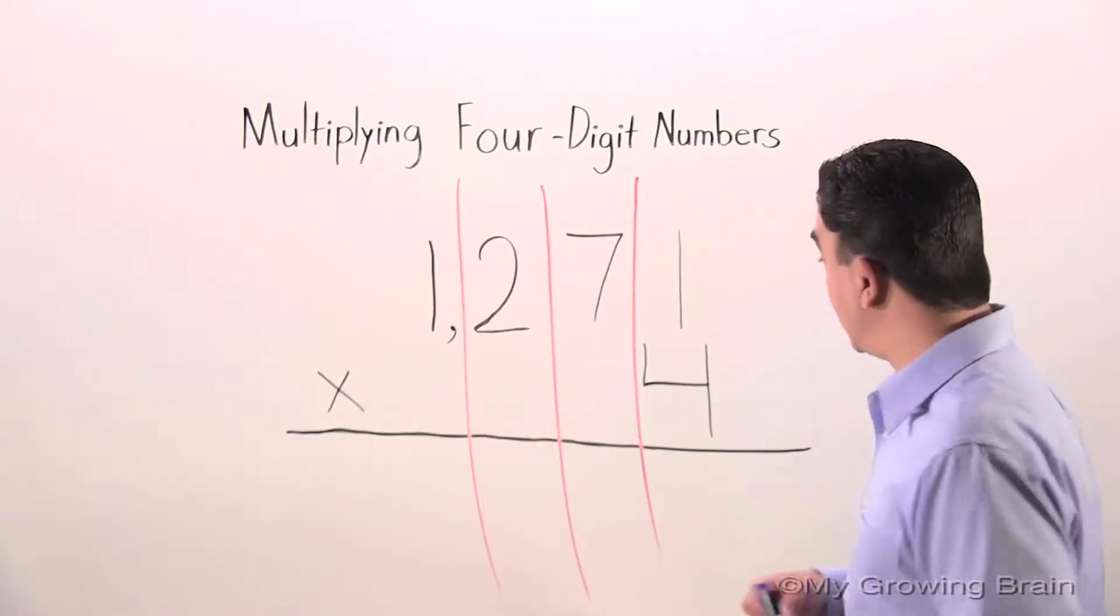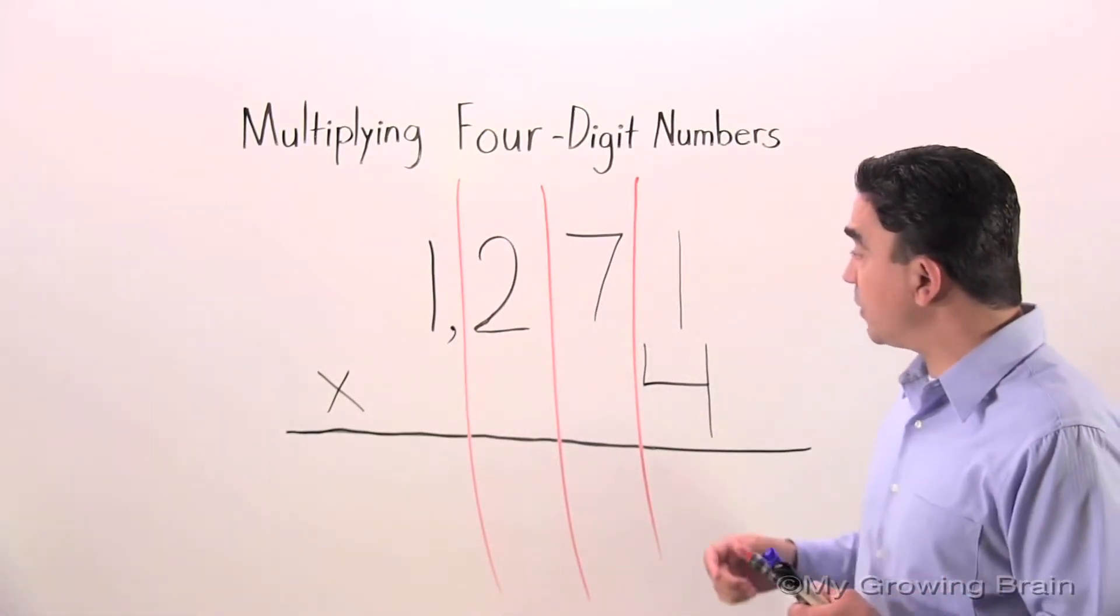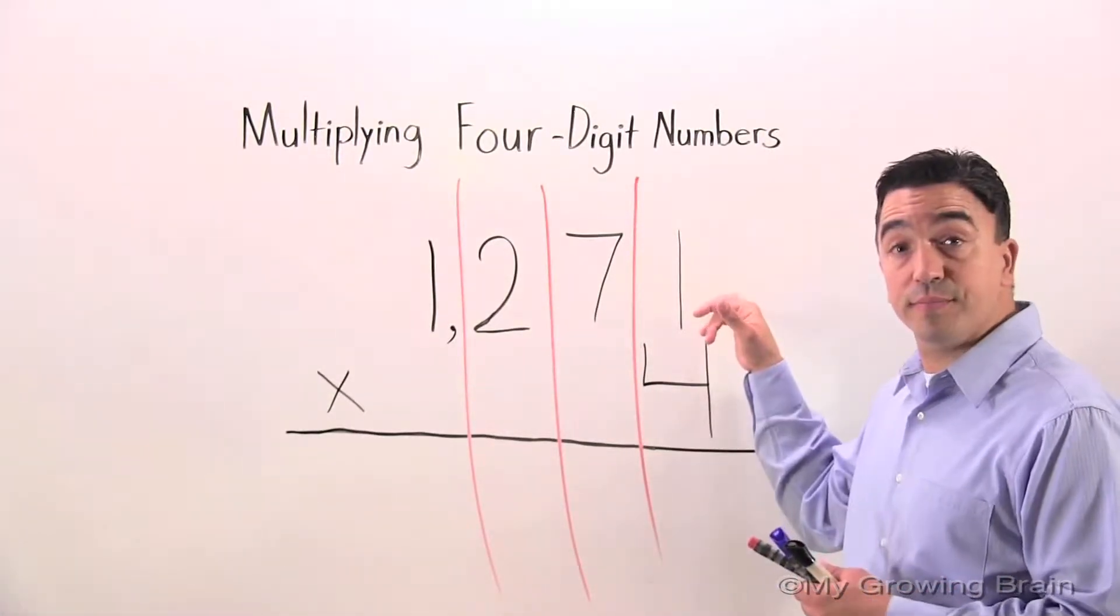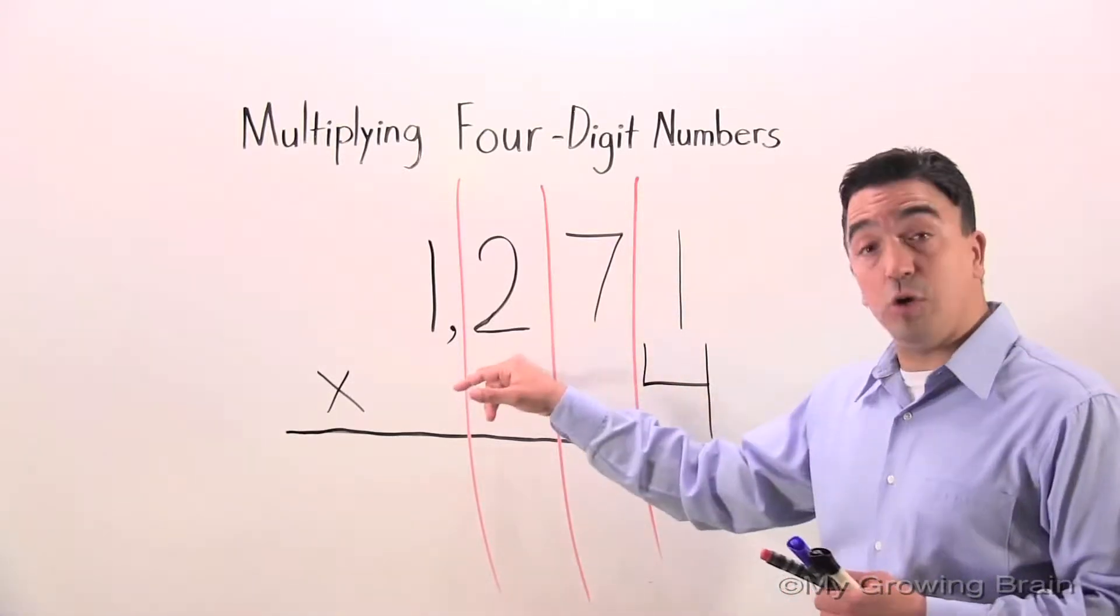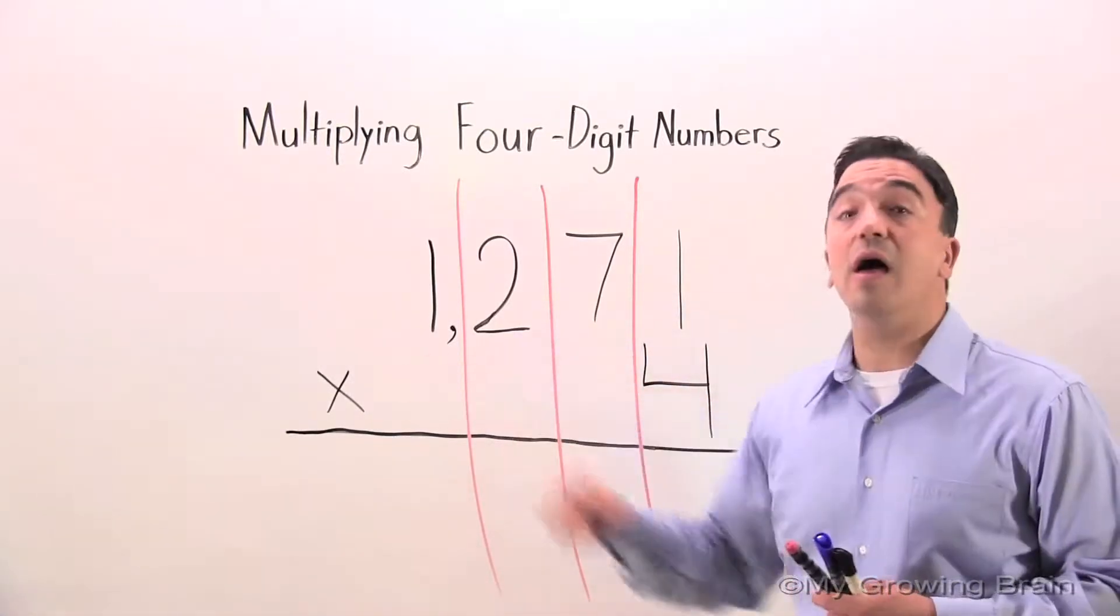So we're going to go right in and we're going to start with the four. And remember, we're going to be multiplying the four times the one, then the four times the seven, then the four times the two, and then the four times the one.